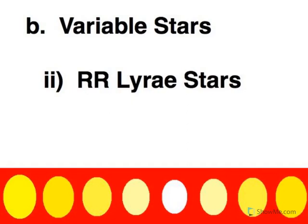RR Lyra is a class of stars. The first one was discovered in the constellation of Lyra, and the star had the exciting name of RR — that's where the name comes from. This is another type of variable star that can be used to get distance.